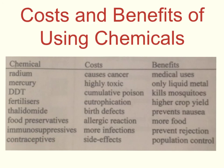Contraceptives are the last example. The pill is one commonly used contraceptive; the obvious benefit is population control and prevention of unwanted pregnancies. The cost is potential side effects, as different people react differently to different contraceptives. There are obviously many more examples of chemicals used by humans — some may have detrimental effects that we might not even know of yet.